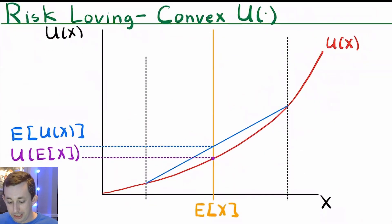We go to a risk loving person, notice that we have the opposite. So Jensen's inequality says that if they're risk loving, it should be that the expected utility is actually greater than the utility of the expected value. That's what we see.